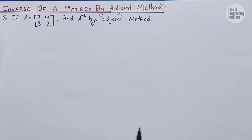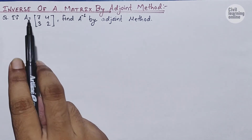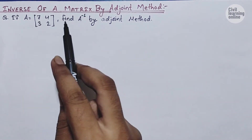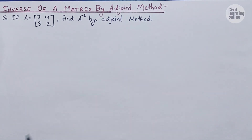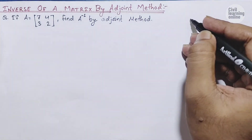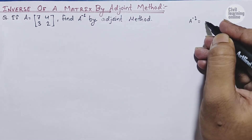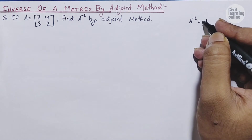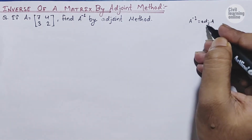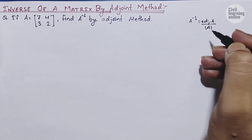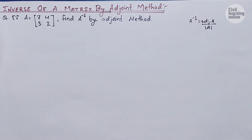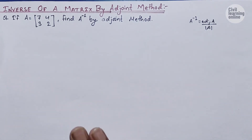We have a question where we are provided with matrix A = [7, 3; 4, 2] and we are asked to find A inverse by the adjoint method. The formula is: A inverse equals the adjoint of matrix A divided by the determinant of matrix A. We can find the determinant of the matrix, and I am going to show you how.